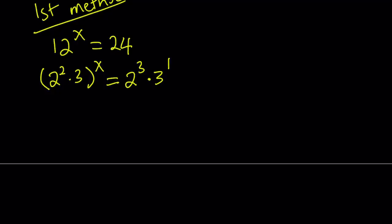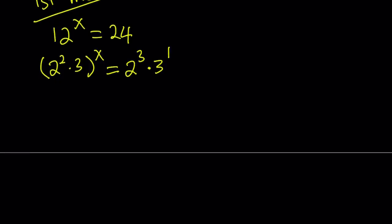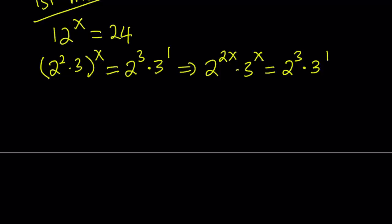Then go ahead and distribute the x. That's going to give us 2 to the power 2x equals 2 to the power 3 times 3 to the power 1. Now I want to put powers of 2 together, so let's divide both sides by 2 to the third power. On the left-hand side, that gives us 2 to the power 2x minus 3. And let's divide both sides by 3 to the power x, bringing it to the right-hand side, giving us 3 to the power 1 minus x.